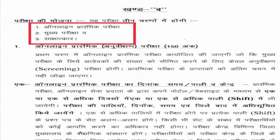अब exam का pattern देखते हैं। इसमें तीन phases हैं: Preliminary, फिर Mains, और फिर Interview। Prelims एक online exam होती है, दो घंटे की, 150 number की। Exam centers nearby cities से होते हैं जैसे Jabalpur, Bhopal, Gwalior, Sagar, Ujjain आदि।